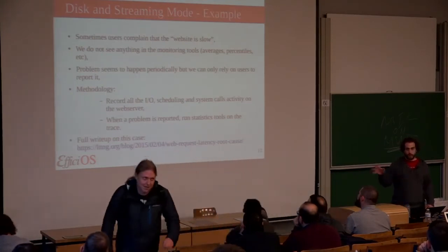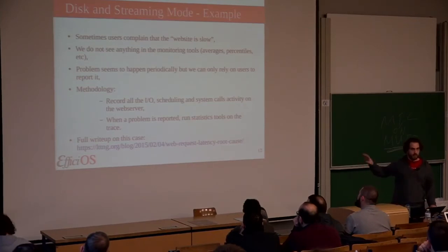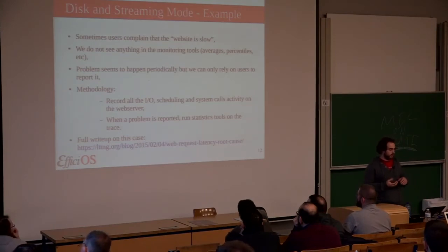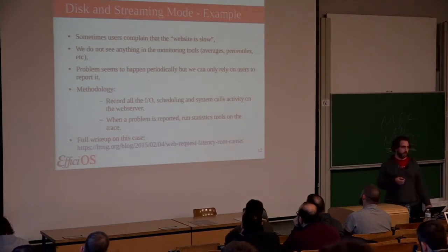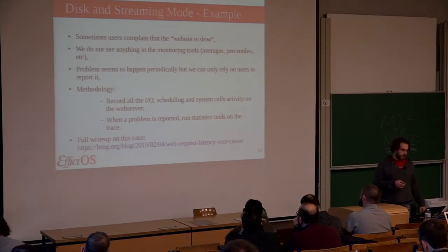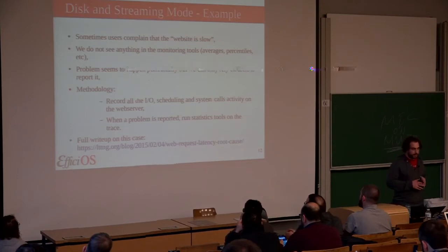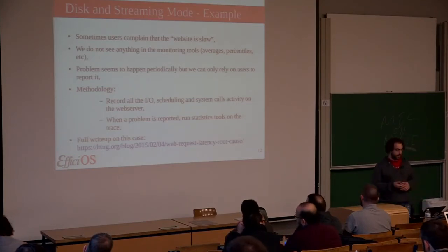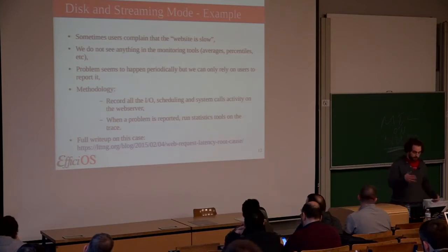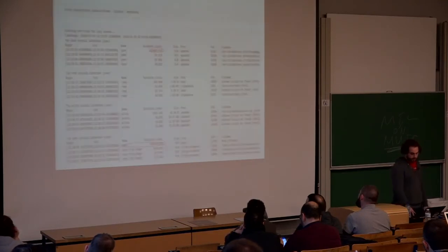A real-world example of disk and streaming mode: we have a full write-up of this case with the link at the end. It's a use case where users complain that the website is slow. You don't know why or when — just sometimes they complain. Standard monitoring tools usually don't record this kind of activity; they take a sample every minute showing packets per second or averages, but you don't see micro-spikes. That's where this kind of observation tool is really handy — we record every IO operation and system call of the web server, and you can specify only a specific process. When somebody reports a problem, you run post-processing tools and extract really detailed information.